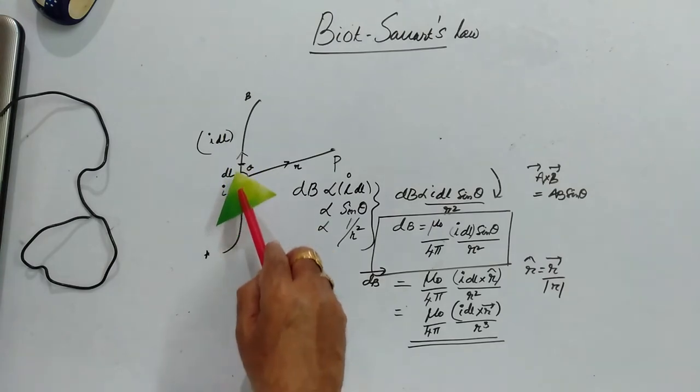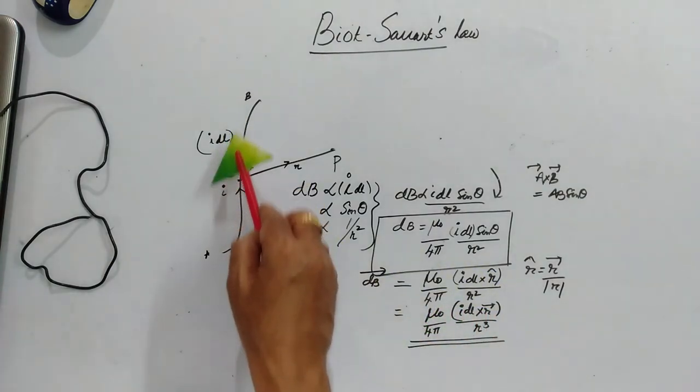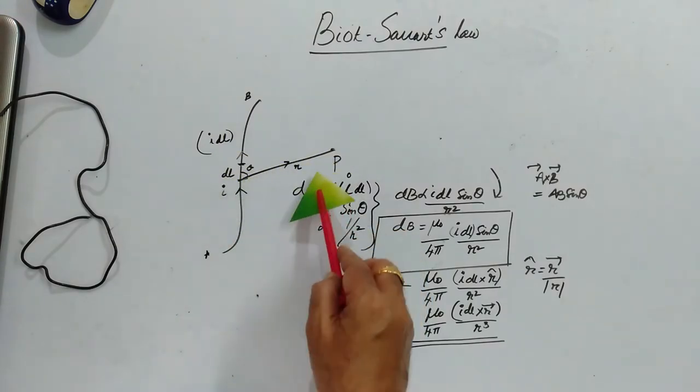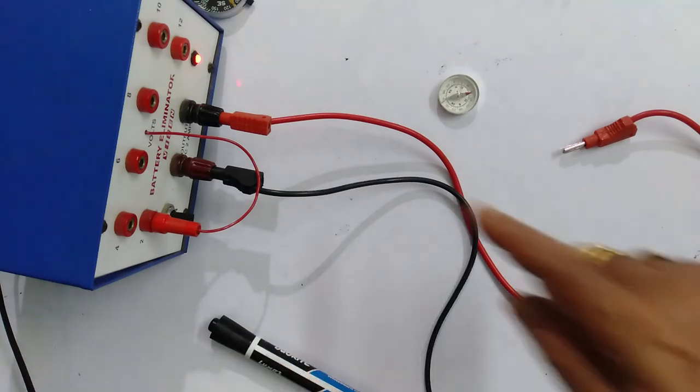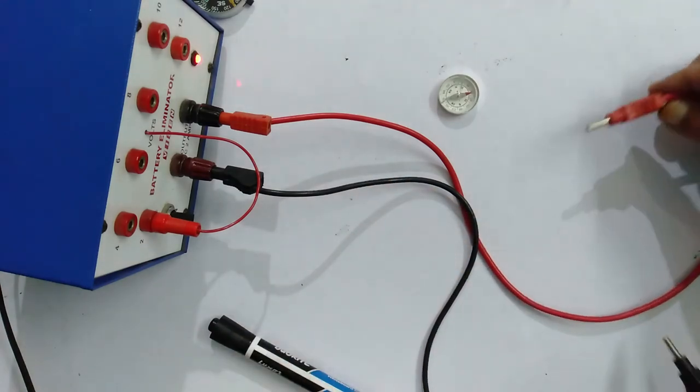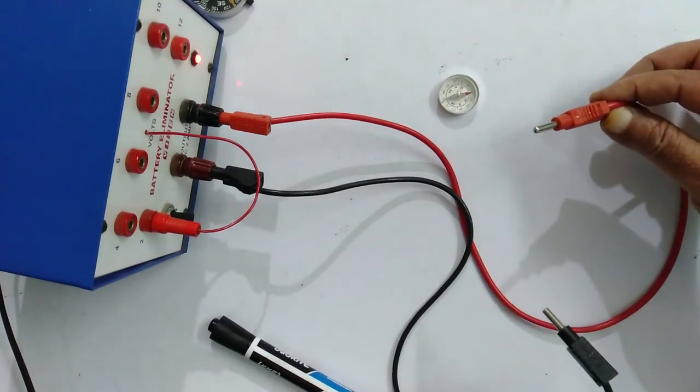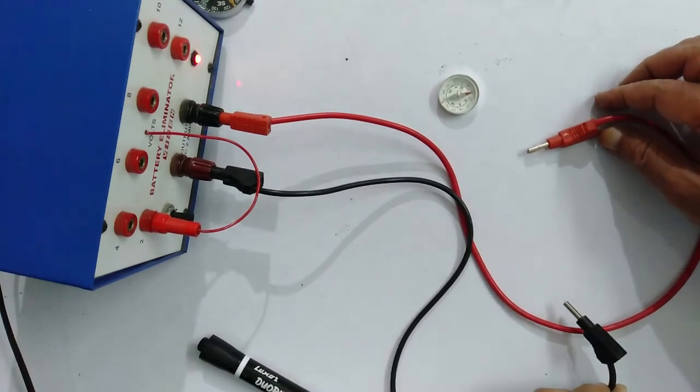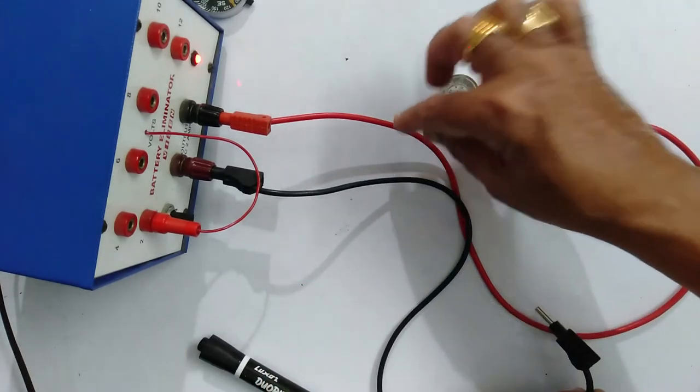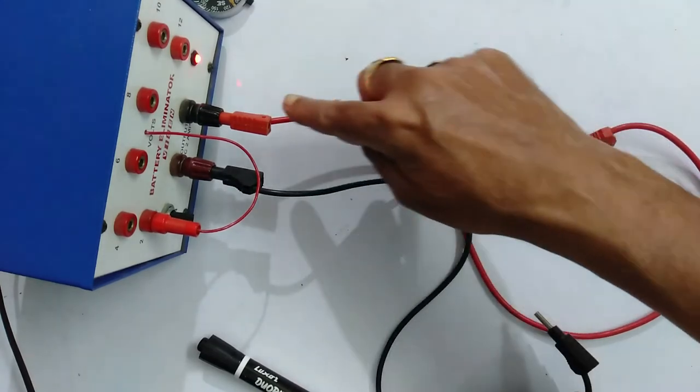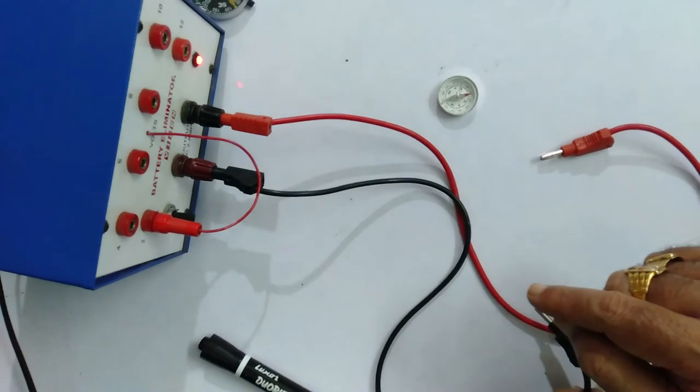So the direction of the magnetic field is the cross product of this I dL vector and R vector. The setup to demonstrate one of the factors of Biot-Savart's law. Now these two wires are not connected. They are separated. I have connected the battery eliminator at 2 volts. When I touch these two, the current will pass through this wire from positive to negative.